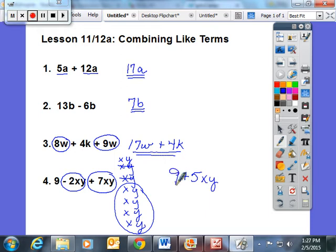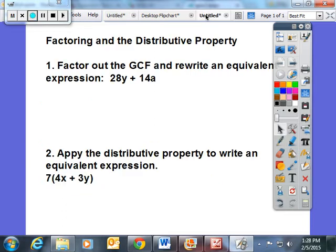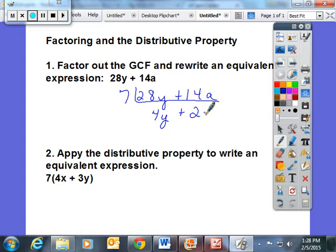I'd like you to try the next portion of our lesson. We worked also on factoring, which is looking at the common factors and the distributive property. For this two-term expression 28y plus 14a, I'd like you to put them in the ladder method and understand that they're both divisible by 7. 28y divided by 7 is 4y. 14a divided by 7 is 2a.